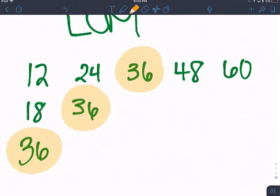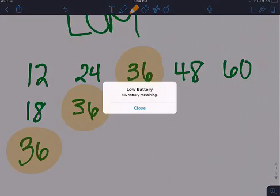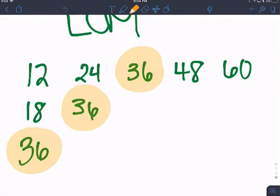So one thing to keep in mind is my least common multiple, it can't be smaller than the biggest number. So my biggest number out of 12, 18, and 36 is 36. The least common multiple can't be smaller than 36. And it's exactly 36, so that works.